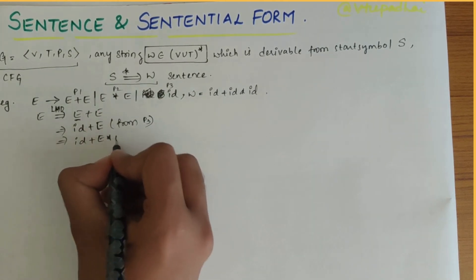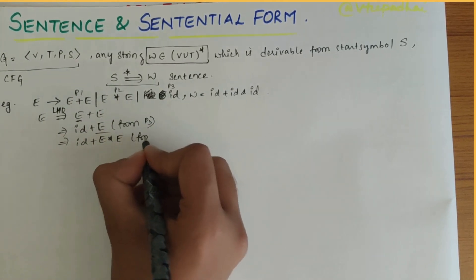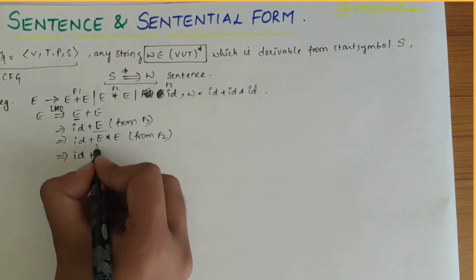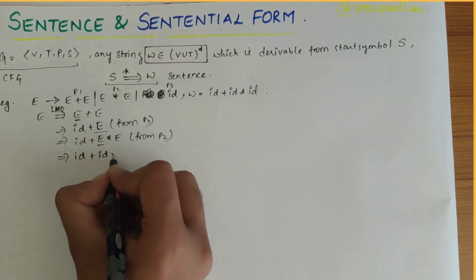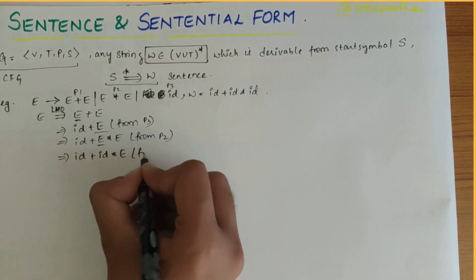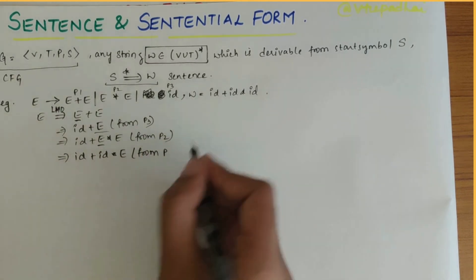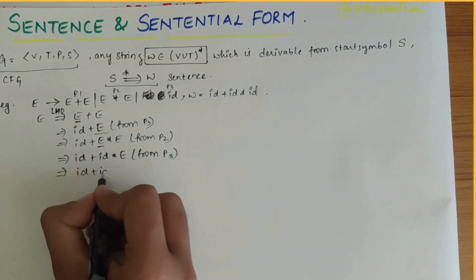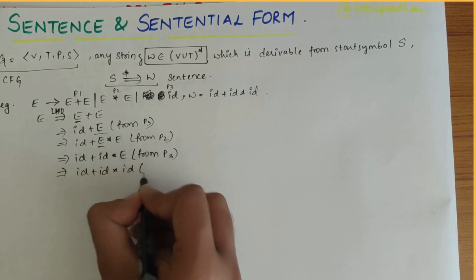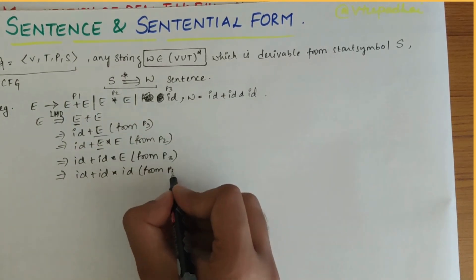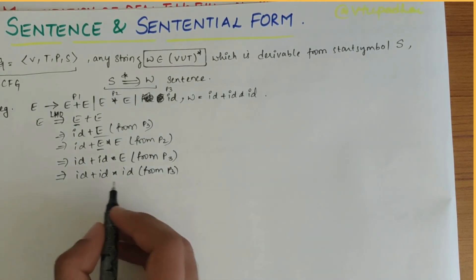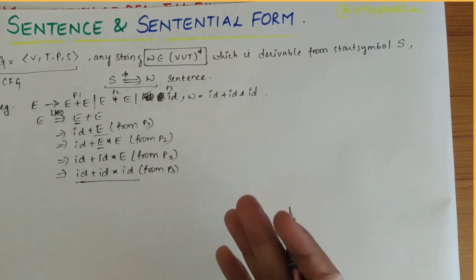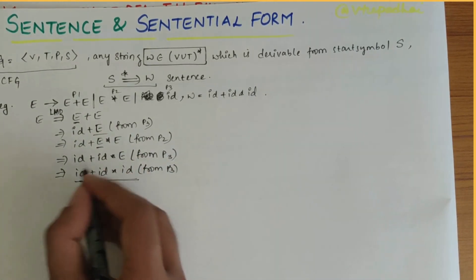Next, id plus E needs to be split as E star E, which is from production P2. Then this E is changed: id plus id star E, from P3 again. Finally, id plus id star id, from P3. So the final string of terminals we have obtained is id plus id star id, and this is called the sentence of the grammar.